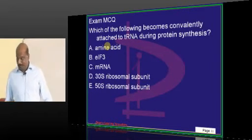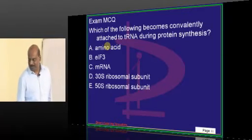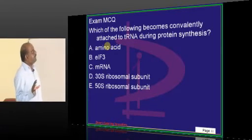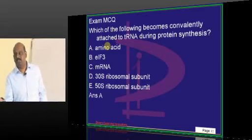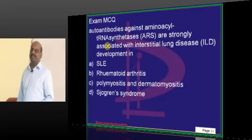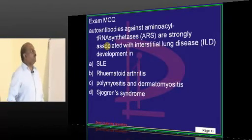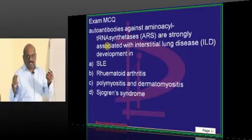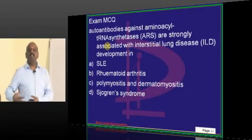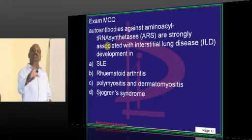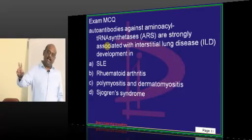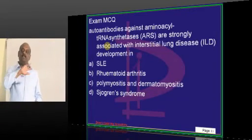MCQ: What is covalently attached to tRNA during protein synthesis? Amino acids are covalently attached. Next: autoantibodies to aminoacyl tRNA synthetase — if autoantibodies are there against that matchmaker, people get interstitial lung disease. Anti-aminoacyl tRNA synthetase antibodies are associated with polymyositis/dermatomyositis.